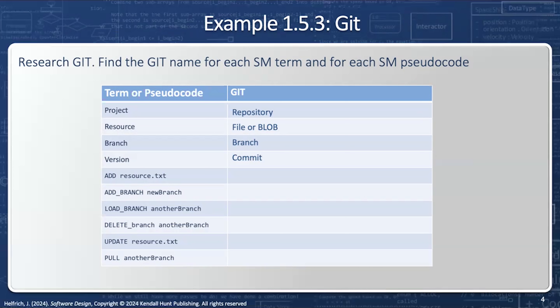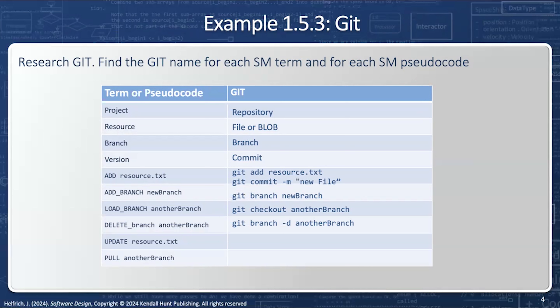Now, if I want to add a resource, I'm going to have to add resource.txt and then commit it — so there's a two-step process with Git. If I want to add a new branch, I'll say 'git branch new_branch'. If I want to load a branch, I'll say 'checkout another_branch'. If I want to delete a branch, I'll say 'branch -d another_branch'. If I want to update a file, once again it's a two-step process: 'add resource.txt' and then 'commit resource.txt'. And finally, if I want to pull from another branch, I'll say 'merge another_branch'.